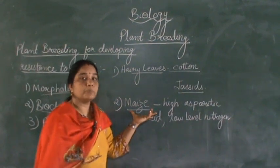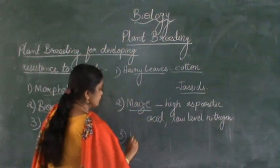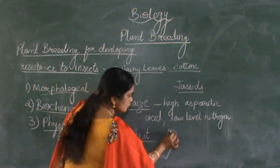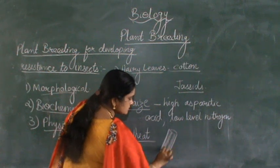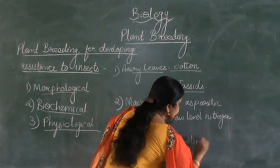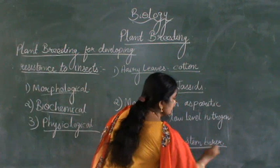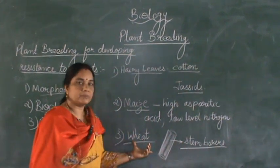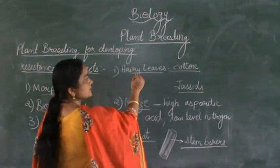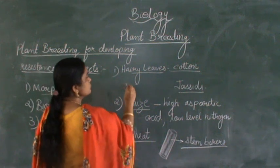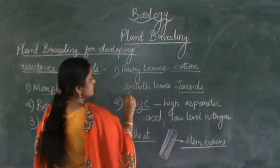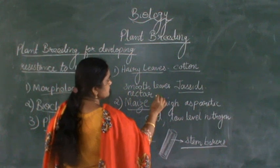Next, you can see in the case of wheat — certain varieties of wheat have a solid stem. When other plants may have a hollow stem, certain wheat varieties due to their solid stem cause certain insects like the sawfly or stem borers to avoid the wheat plant because of the presence of the solid stem. In another variety of cotton plant, the leaves are smooth and the plant is nectarless — it doesn't produce nectar.